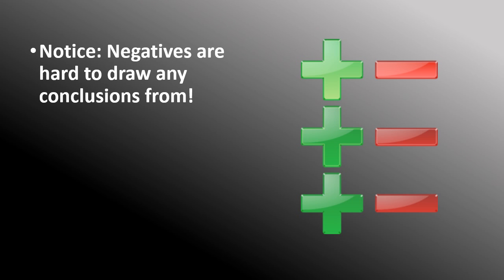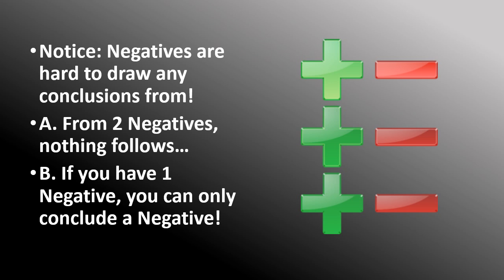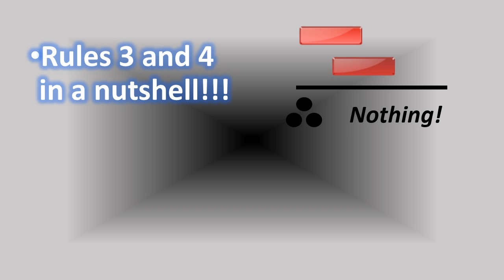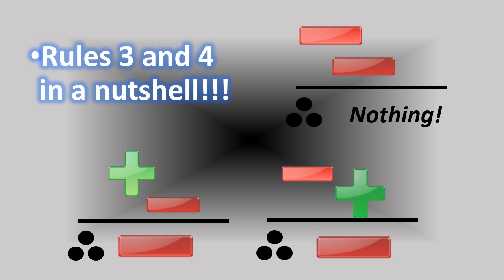That concludes our lessons on distribution. Remember the two rules: if you distribute a term in the conclusion, make sure you've done it at least once in the premises; and make sure the middle is distributed at least once in the premises. Moving on to positive and negatives — the quality of sentences. Negatives are hard to draw conclusions from. From two negatives, nothing ever follows. And if you have one negative in your premises, you can only conclude a negative — from a combination of one positive and one negative premise, you get a negative conclusion every single time.